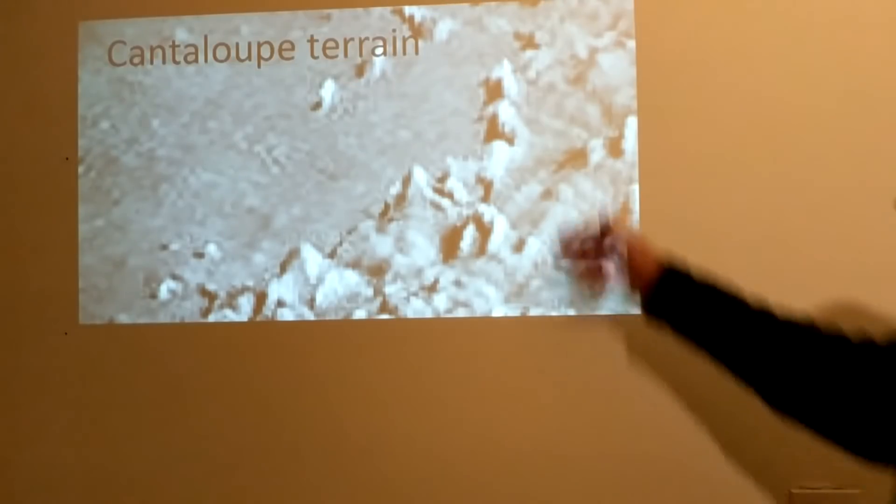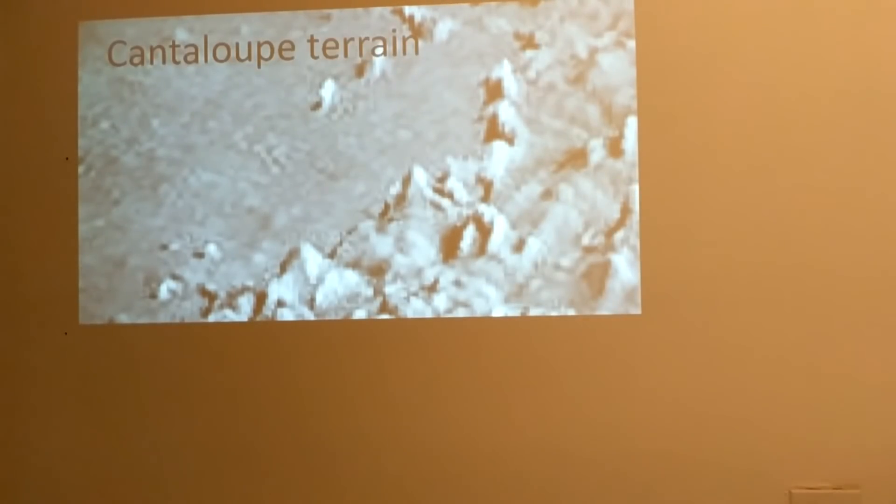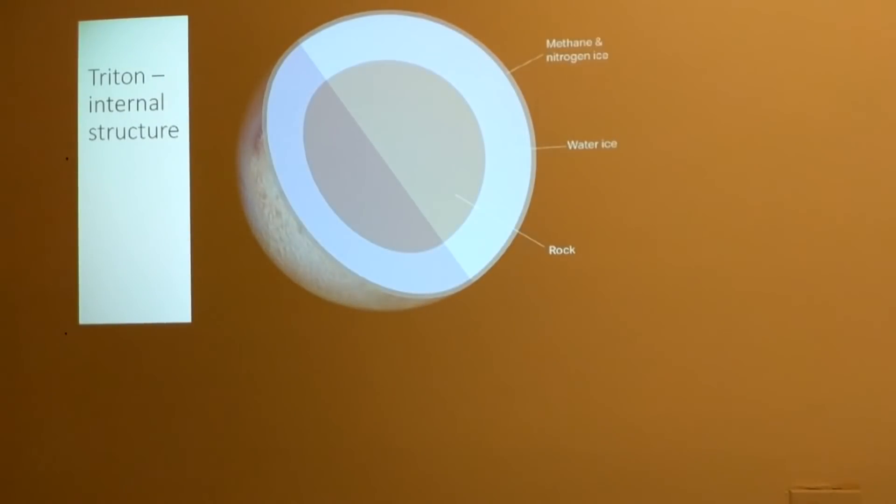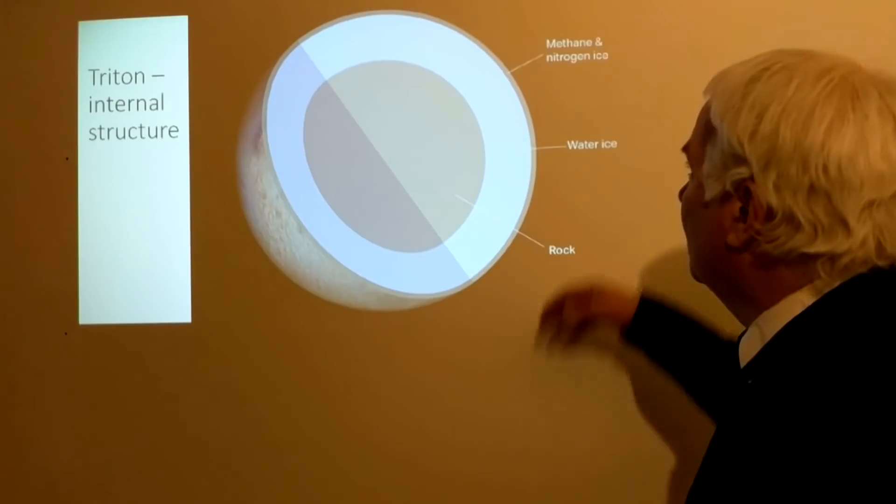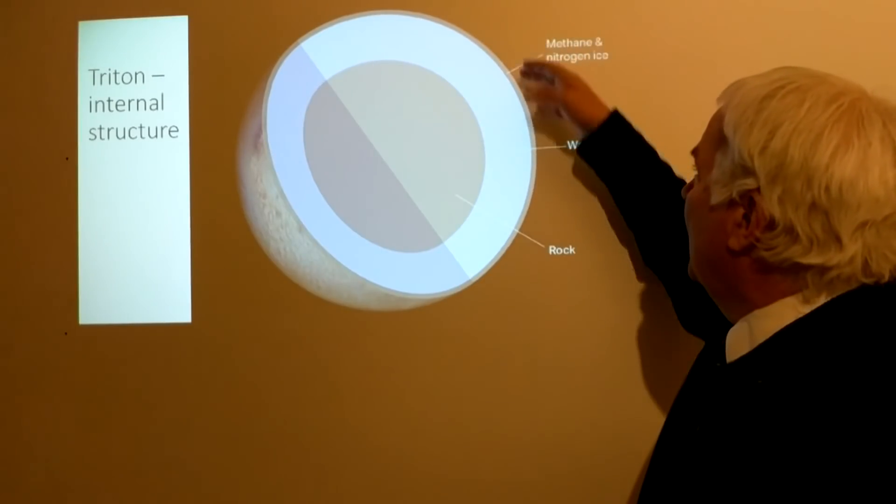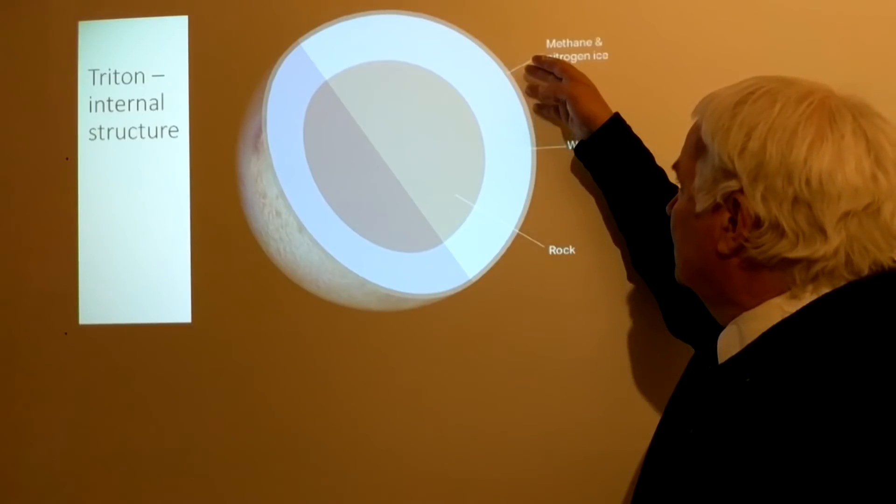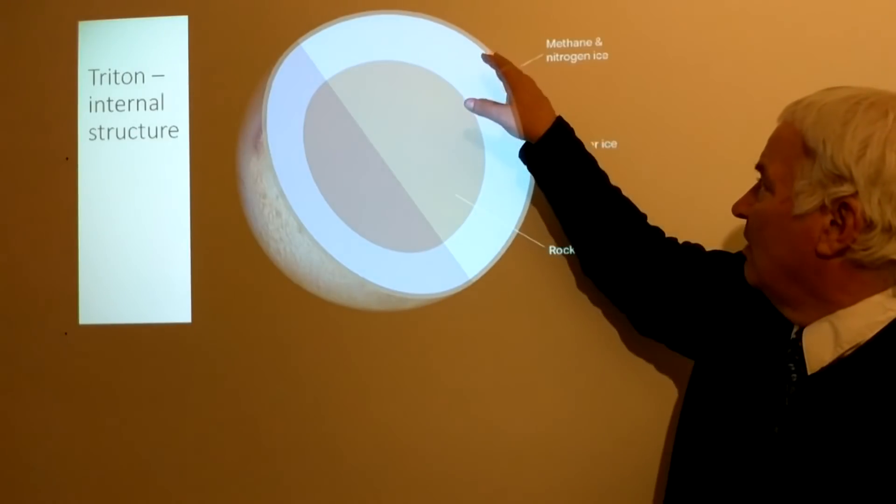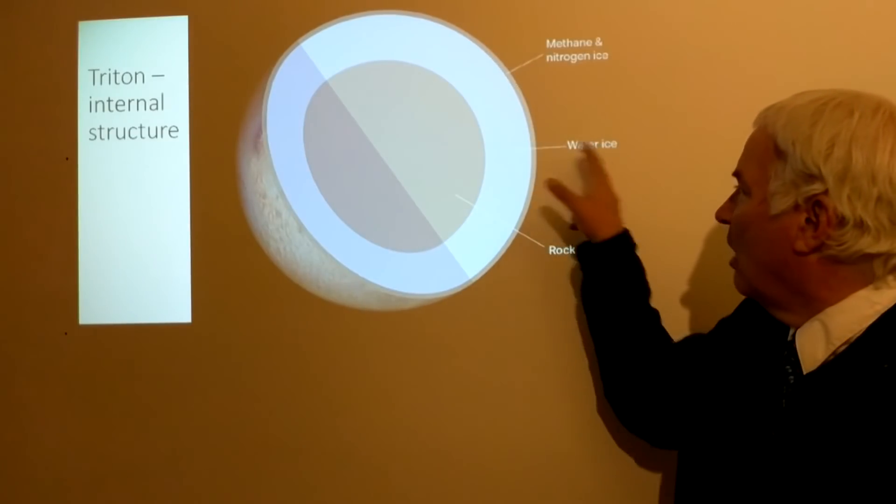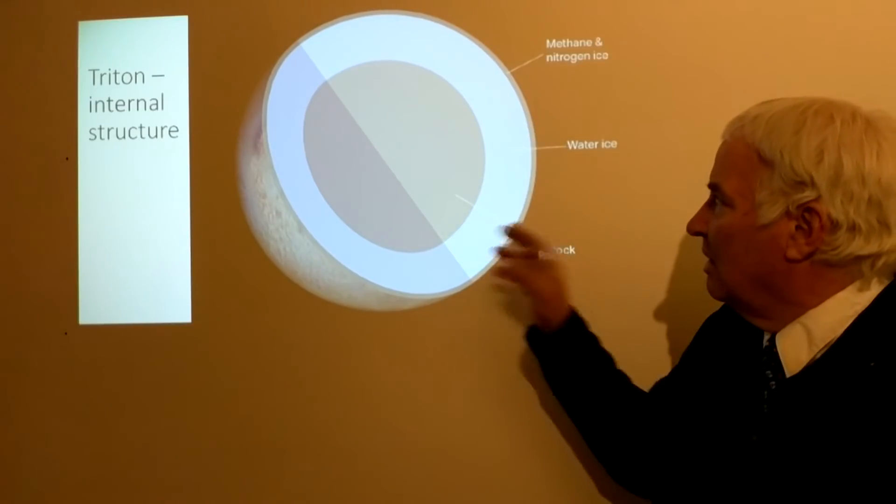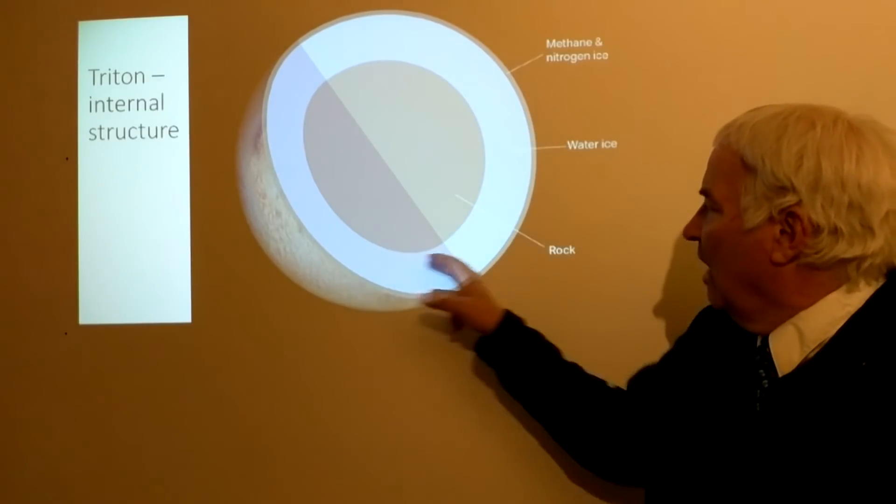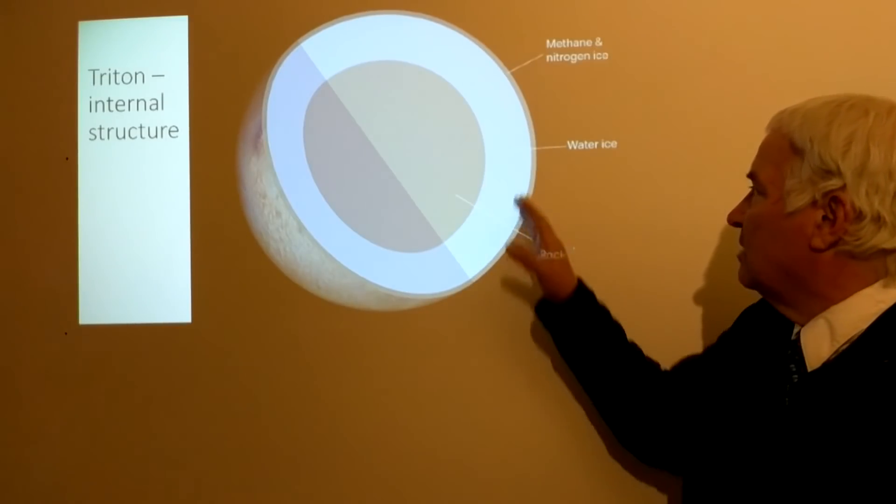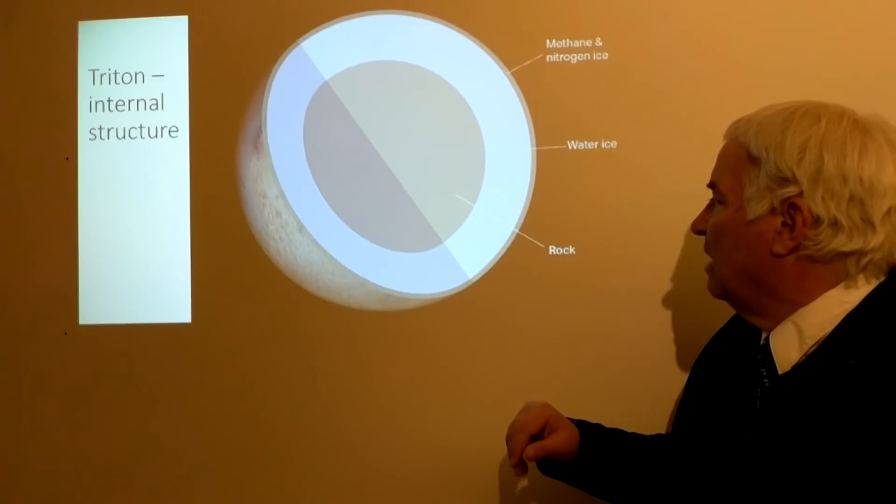The internal structure of Triton: on the surface, we'll start on the surface here, the methane and nitrogen ice. It's very cold, so nitrogen is in the form of ice and methane also. This would form a top layer. Now, water ice is a big constituent of Triton, and it's frozen down below the methane and nitrogen ice, so it forms kind of a frozen mantle here.